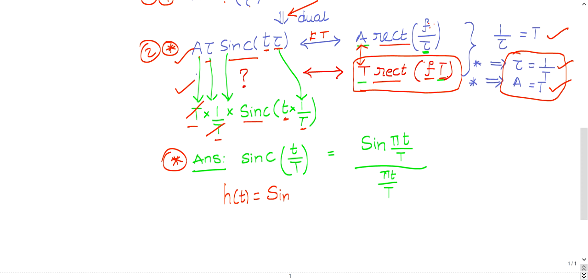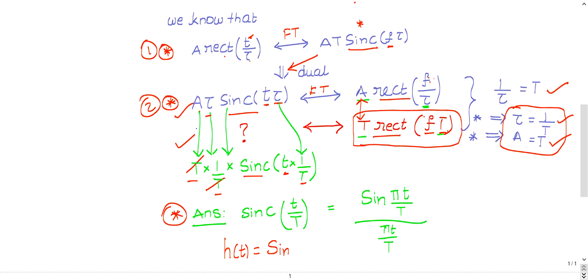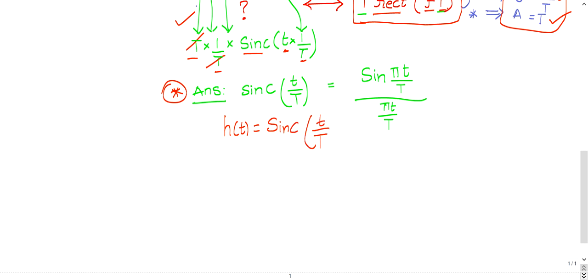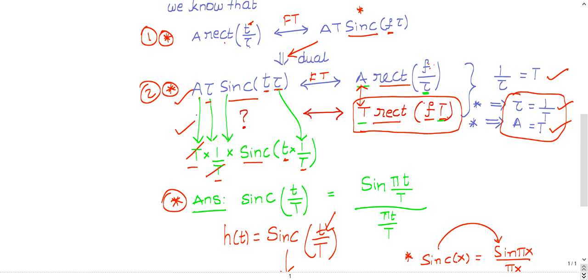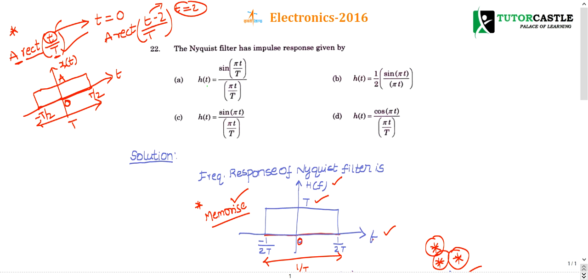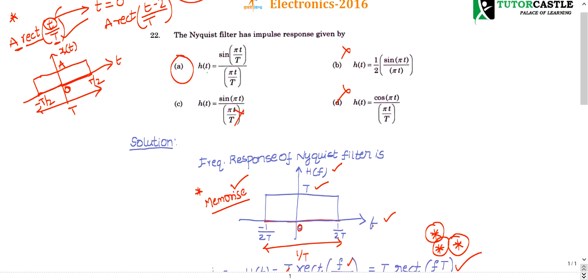So the impulse response of the Nyquist filter is sinc(t/T). Some people directly remember this. This can be written as sinc(x) = sin(πx) / (πx), so sinc(t/T) = sin(π·t/T) / (π·t/T). This is the formula for sinc in terms of sine. The right choice is option A because it matches sin(π·t/T) / (π·t/T). The other options are incorrect.